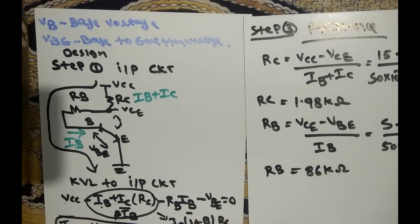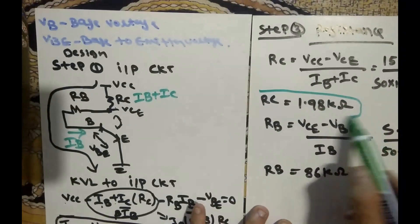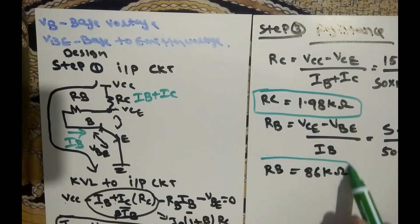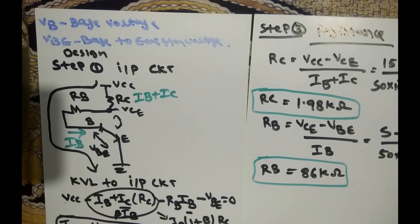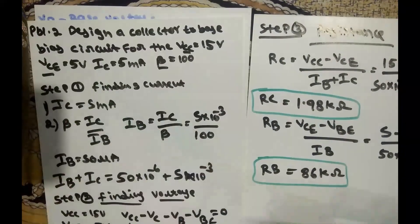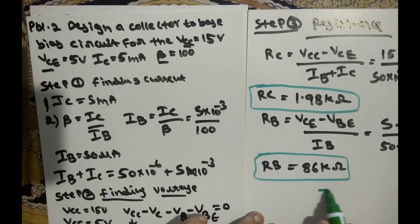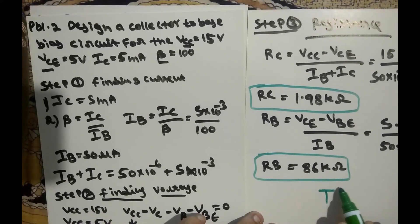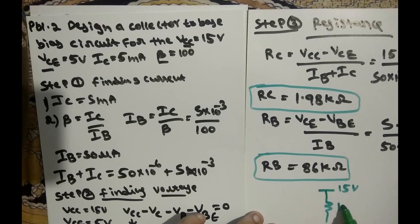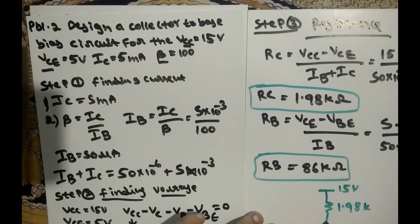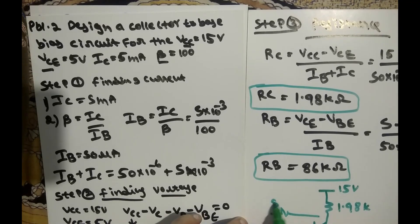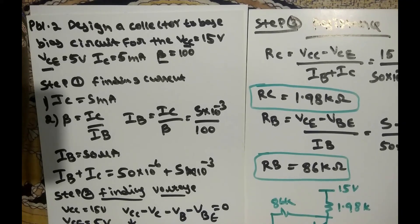So in this problem we found two resistors: RC equals 1.98 kΩ and RB equals 86 kΩ. For a design problem, finally draw the circuit diagram showing the resistance values: VCC equals 15V, RC equals 1.98kΩ, RB equals 86kΩ, emitter side grounded. This is the designed circuit for the given VCE and IC Q point values.